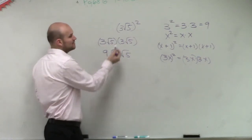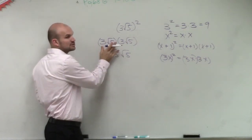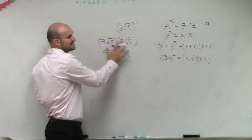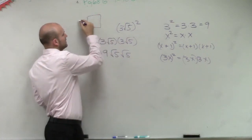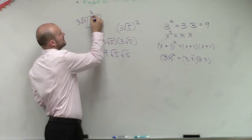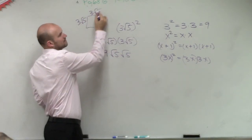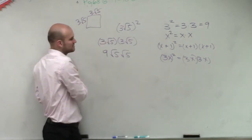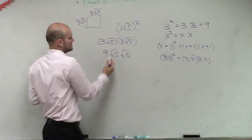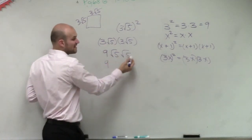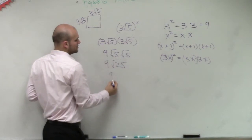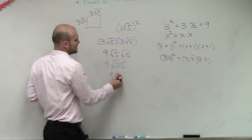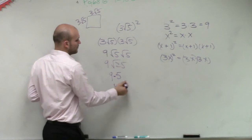We don't have to use the box because these quantities are just monomials — we don't need to separate them. They're not separated by addition or subtraction. So this becomes 9, and square root of 5 times square root of 5 is the square root of 25, which equals 5. So 9 times 5 equals 45.